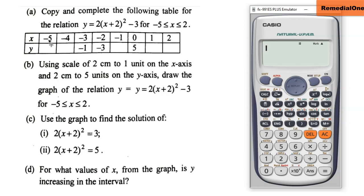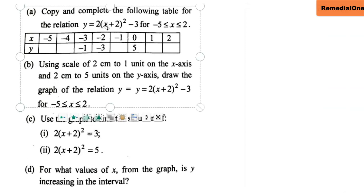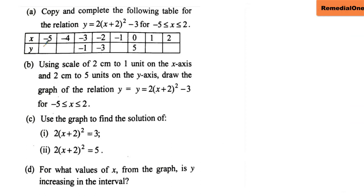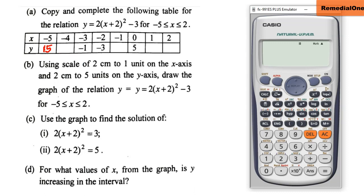We are starting from x = -5. Wherever I see x I will replace it with -5. Let me grab my calculator: 2 × (-5 + 2)² - 3. We get 15, so you write 15. Now pick the calculator again: 2 × (-4 + 2)² - 3. That gives us 5. Write 5 there.